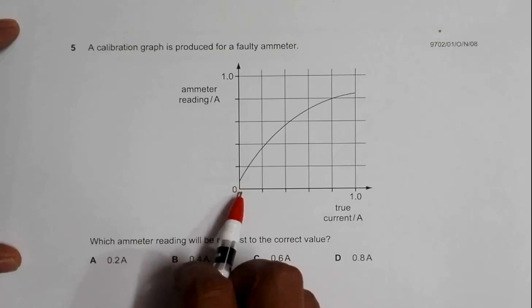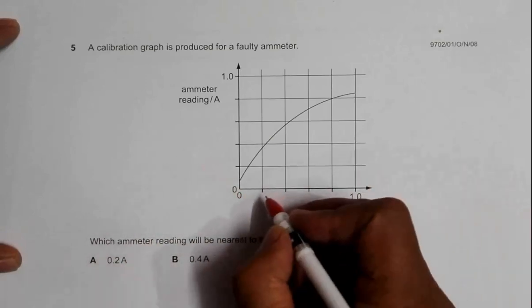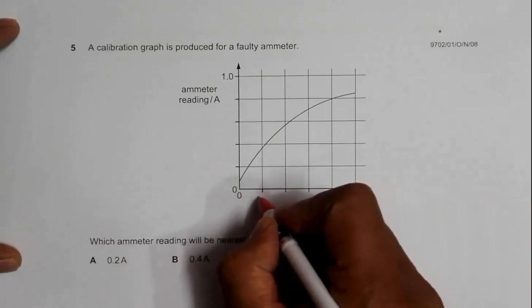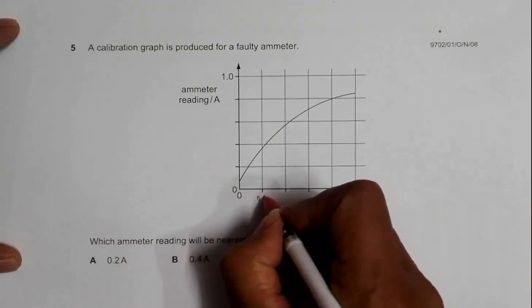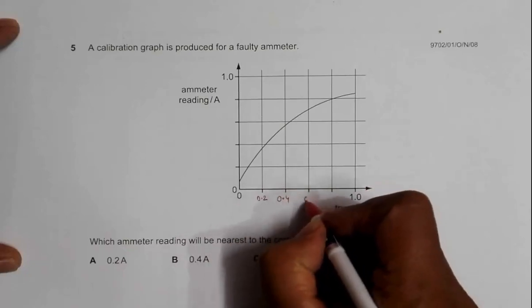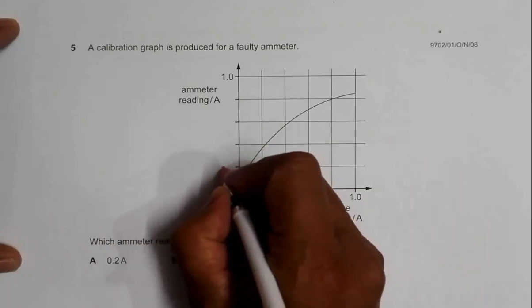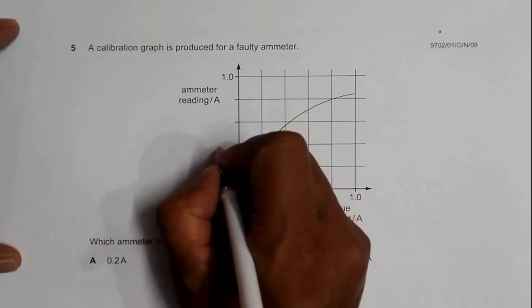If I calibrate the readings, what we have is 0.2 ampere, 0.4 ampere, 0.6 ampere, 0.8 ampere. So it is 0.2 ampere, 0.4 ampere, 0.6 ampere, and again 0.8 ampere.